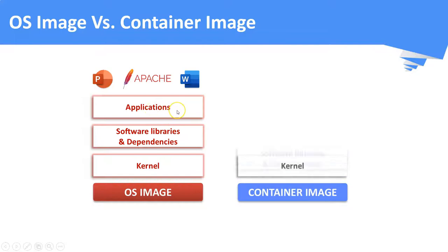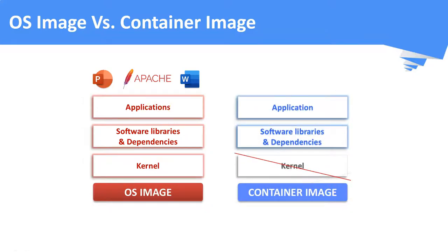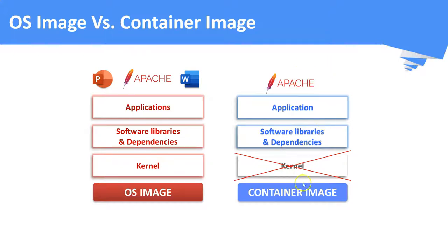Whereas in a container image, there won't be any kernel present, but the necessary software libraries required to run a particular application alone will be present. Taking the same Apache example, the necessary software to run the Apache web server alone will be present in a container image. When you run a container with this image, the container will have only this Apache package.